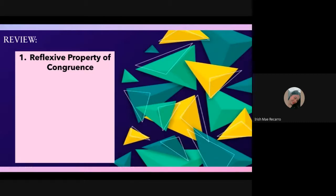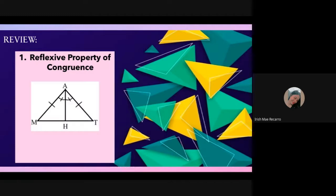Very good, Rika Ronak! That is correct. One is congruent to one, or angle A is congruent to angle A. Remember reflexive, because it is used a lot in proving. My example uses an angle. How can we apply reflexive property of congruence in a triangle?